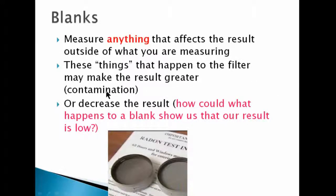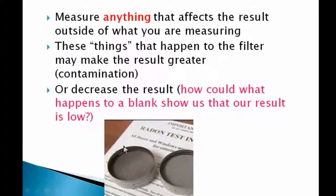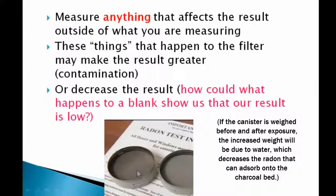A blank can also show you that something happened that decreases the result. These are charcoal canisters that you just open up in an environment — the radon in the air gets adsorbed onto the activated carbon. It's important when making measurements with charcoal canisters to use a blank because of moisture in the air. If you've got a blank charcoal canister and you open it and then close it, and during that time a lot of water gets onto the activated carbon, that basically takes up all the room that the carbon has to adsorb radon, and you'll be able to see that in the blank.